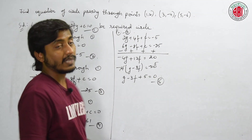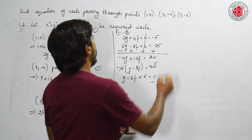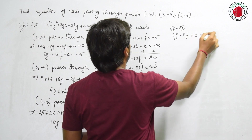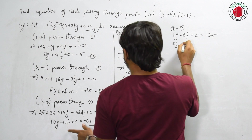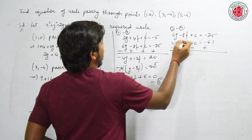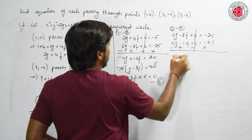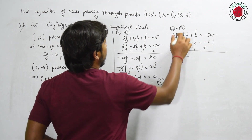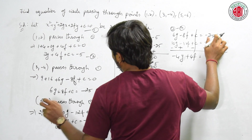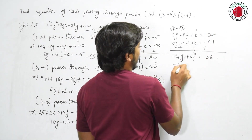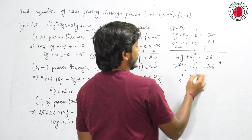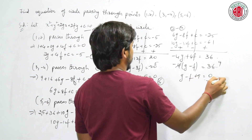Subtracting equations 3 and 4: 6g minus 10g gives minus 4g, minus 8f plus 12f gives 4f, and minus 25 plus 61 gives 36. Taking minus 4 common, I get g minus f equal to minus 9 — equation 6.